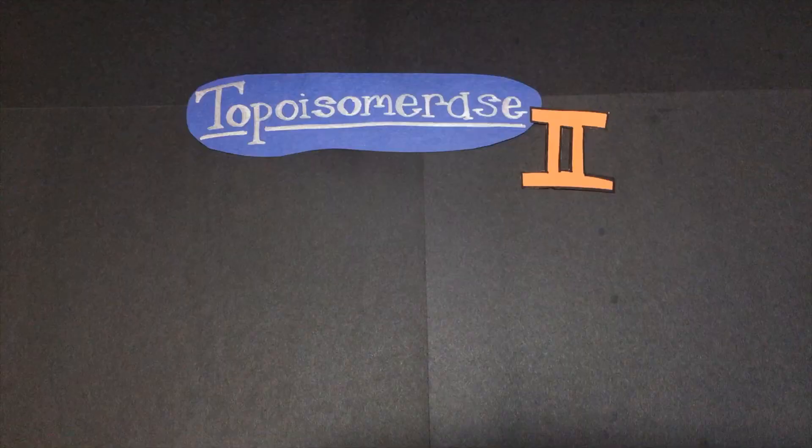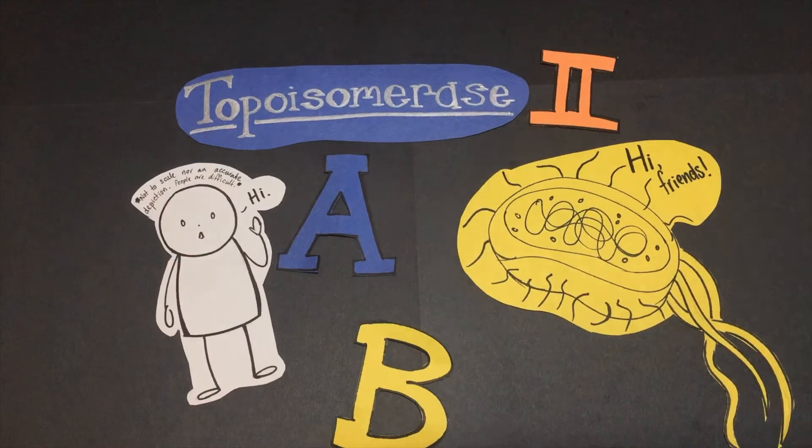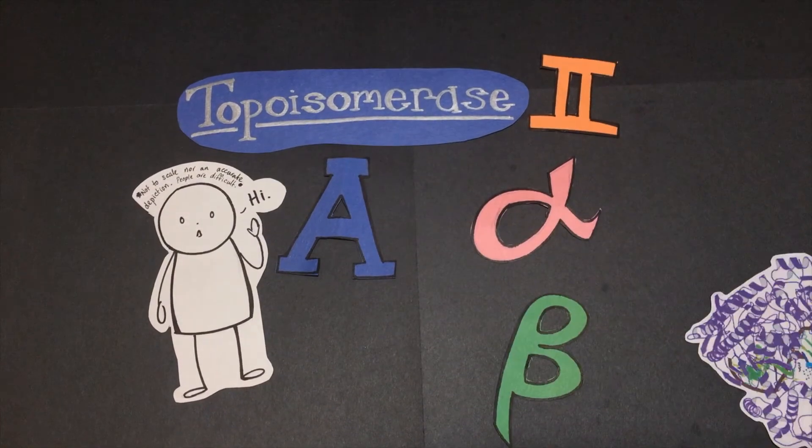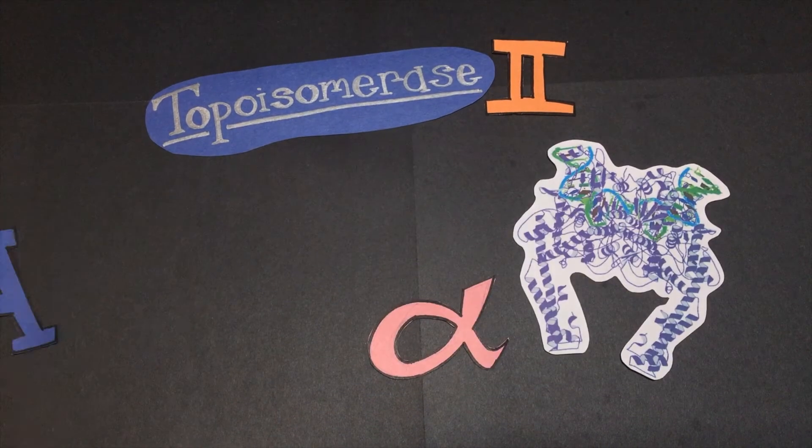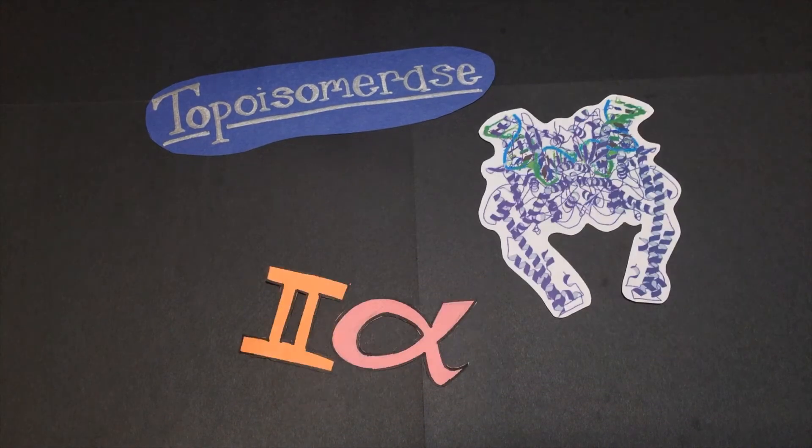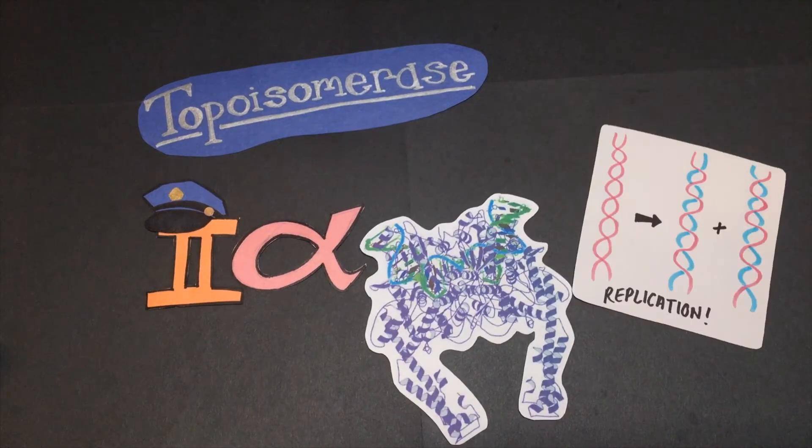Within type 2 topoisomerases, there are two classes, A and B. Class B is found only in archaea, so I chose type A. And within type 2a topoisomerases, humans have two isoforms, alpha and beta respectively. I chose to analyze the structure of topoisomerase 2 alpha, which has a larger role in chromosome segregation and DNA replication and tends to be expressed in more proliferating tissues.